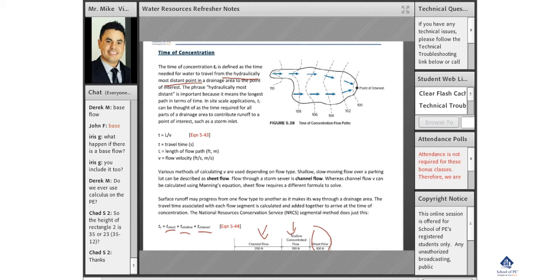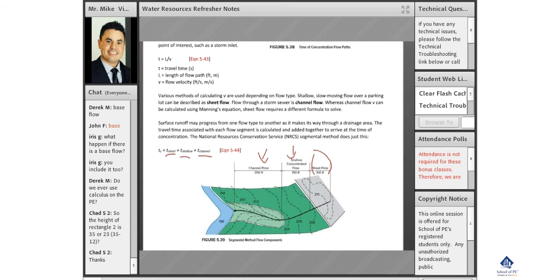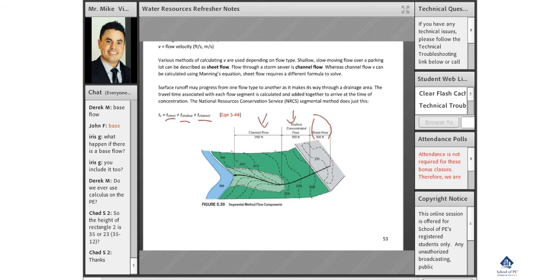And then at some point it actually hits a defined channel and we have what's called time in the channel. There's different ways to calculate these three. Let me scroll up. Once it finally hits a channel, it's actually in channel flow. And then what we say is that it starts to flow a lot faster. So T channel is usually pretty quick.